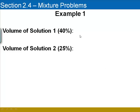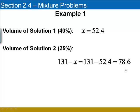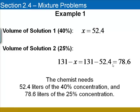Now, since the volume of solution 1 was represented by X, we know that we're going to need 52.4 liters of that solution. To find the volume of the other solution, we're going to subtract that from 131, and that will give us 78.6 liters of solution 2. So, the chemist needs 52.4 liters of the 40% concentration and 78.6 liters of the 25% concentration.